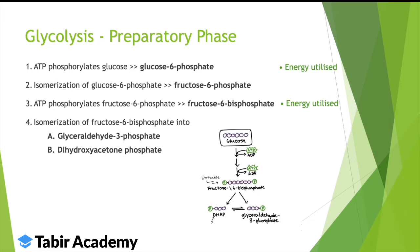Glycolysis can be divided into two phases: the preparatory phase, in which energy is utilized, and the oxidative phase, in which energy is produced. In the preparatory phase, ATP is used — ATP phosphorylates glucose, so glucose becomes glucose 6-phosphate.